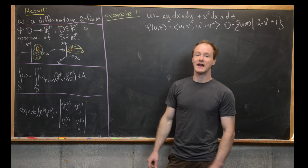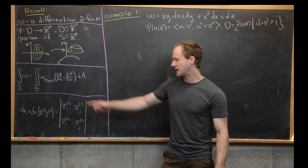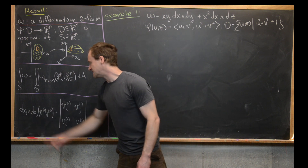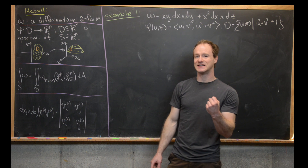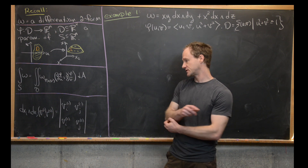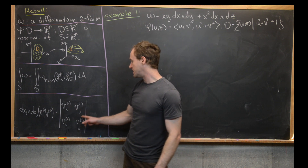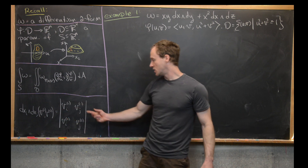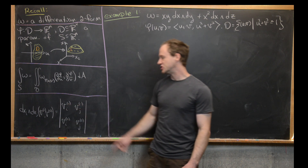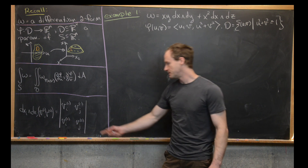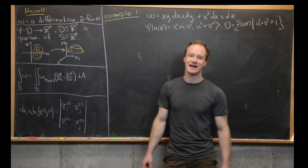Let's recall that two-forms are built out of wedge product things, defined in the following way. We have dx_i wedge dx_j, which takes as input two vectors and outputs a number — specifically the determinant of the matrix whose first row is the i-th and j-th components of the first vector, and whose second row is the i-th and j-th components of the second vector.